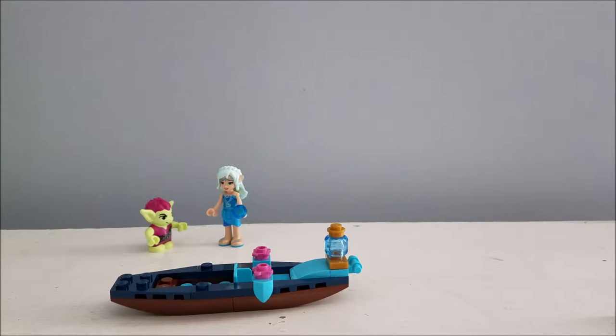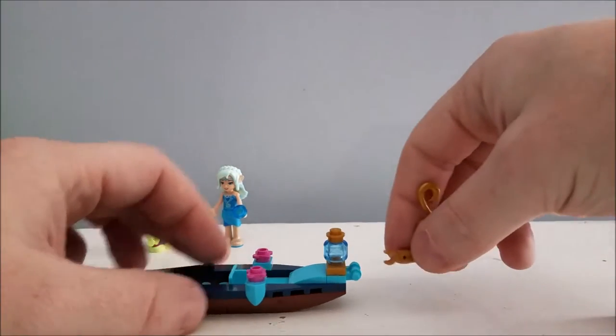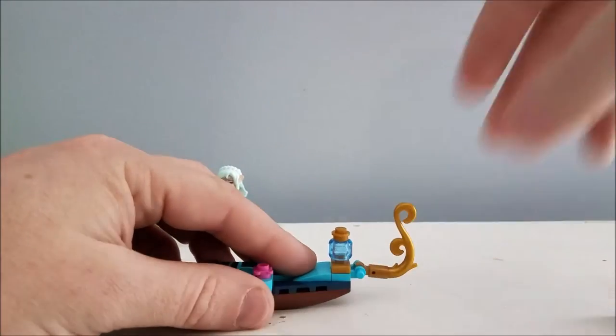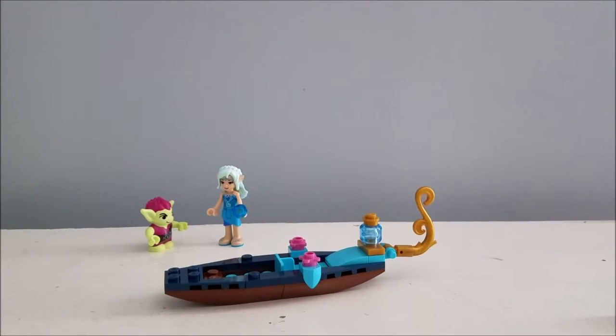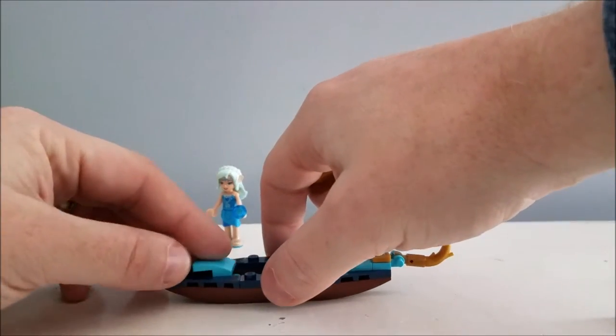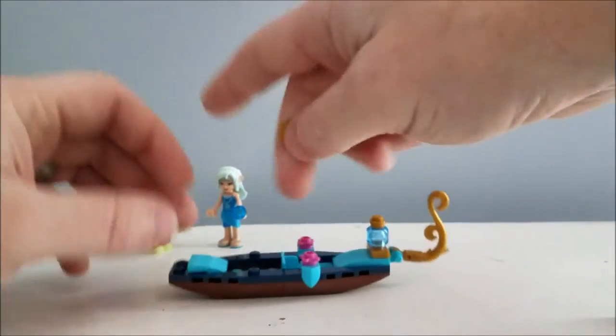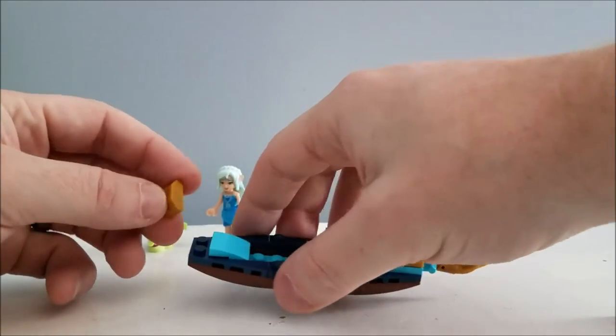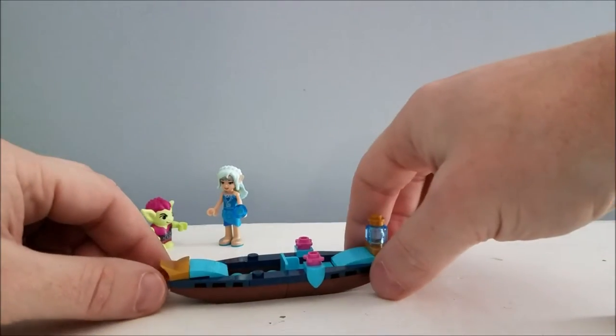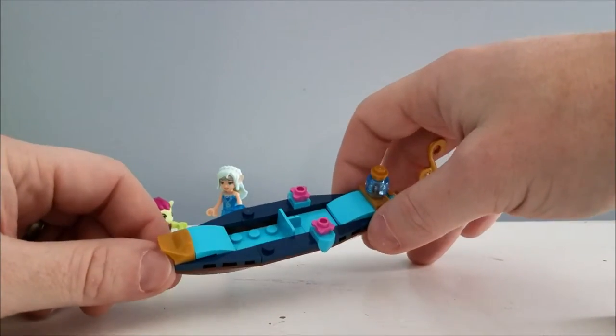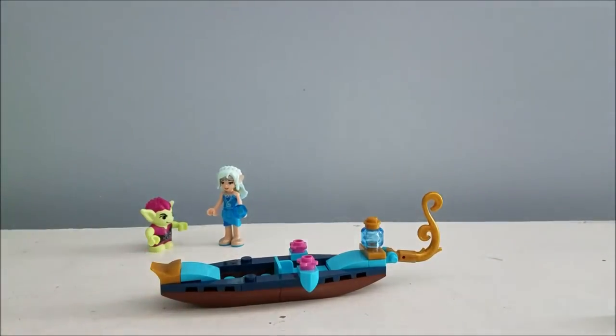Next we get to build the little tail of the boat. We're gonna put this piece here, now work on the front. This one goes like that. Oh this is becoming such a cool looking boat. I really like it so far.